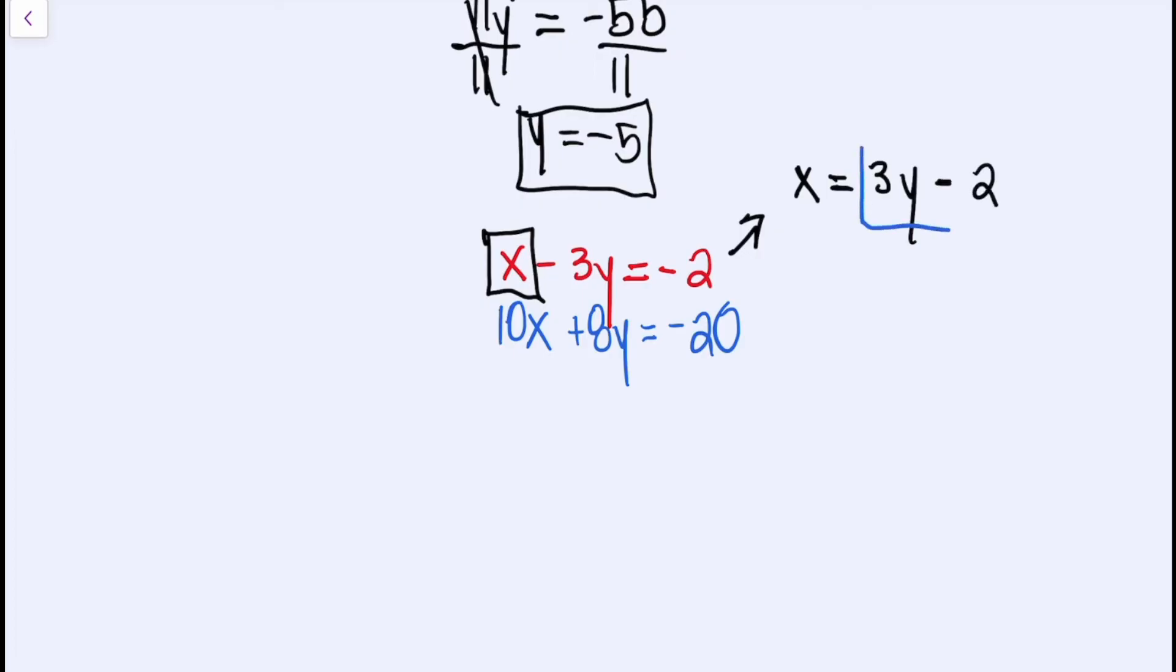So that means anywhere that we see X in the second equation, we're going to plug in 3Y minus 2 for X. So let's do that. We have 10 times, and then put it in parentheses. That's what we like to do. 3Y minus 2. Close our parentheses, and then we're going to write the rest of the equation.